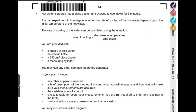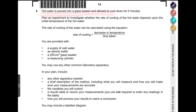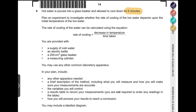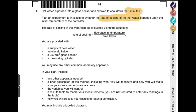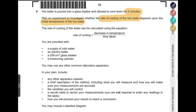Now let's move on to the second question. Hot water is poured into a glass beaker and allowed to cool for five minutes. You need to plan an experiment to investigate whether the rate of cooling of hot water depends upon the initial temperature of the hot water. The rate of cooling is calculated using: rate of cooling equals the decrease in temperature divided by the time taken. The decrease in temperature is the initial temperature minus the final temperature, so you need both readings while planning your experiment, along with the time taken.